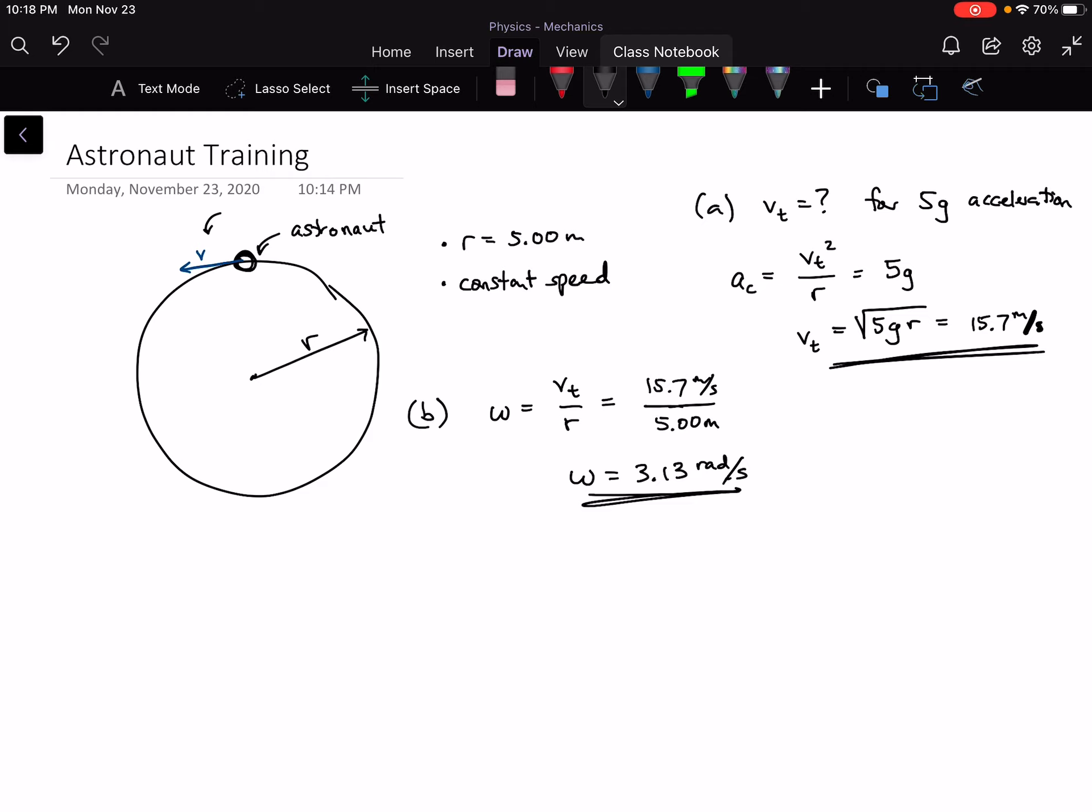Part c: how would the acceleration in part a compare to the acceleration of a box sitting 2 meters from the axis of rotation? So in other words, if we've got a box sitting, well, to scale, it would be right about there, right? What would be its acceleration?